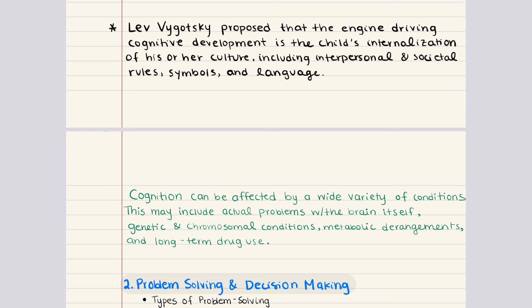As a child develops, their skills and abilities are still in formative stages, but with the help of adults and other children, those skills can develop further. This may come in the form of instruction from a teacher, adult, or another child, or even watching other people perform a skill. Ultimately, the engine driving cognitive development, according to Vygotsky, is the child's internalization of their culture.